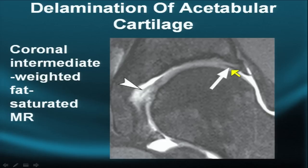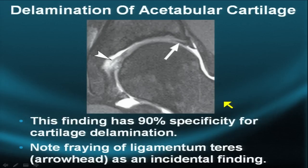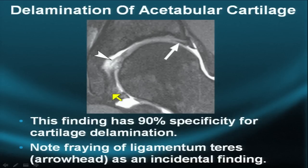This laminar effect of dark signal intensity in the superolateral acetabulum is diagnostic of chondromalacia. It has 90% specificity for cartilage delamination or cartilage peeling. The ligamentum teres insertion and its fraying are highlighted, remembering there are two bundles of insertion: a pubic and an ischial bundle.